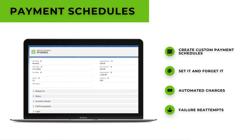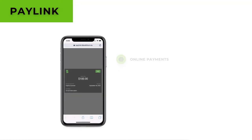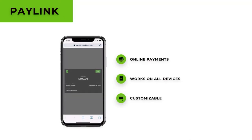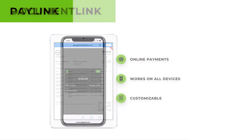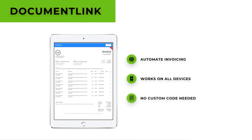Another key feature that we offer with Blackthorn Payments is PayLink, where you can request online payments. It works on all devices and has a number of customization options. Our document link feature allows you to automate your invoicing, reducing the risk of clerical mistakes and creating a more seamless customer experience.